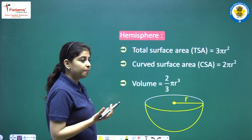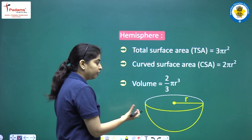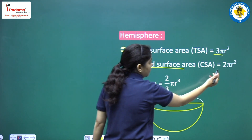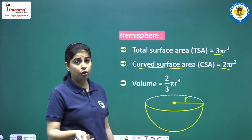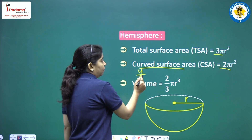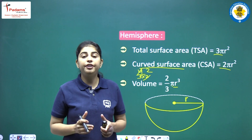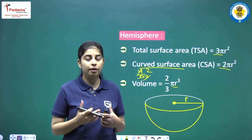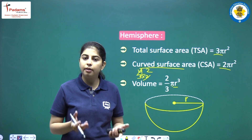Next, hemisphere — hemisphere is half of a sphere, like cutting a ball in half. It has radius r. The total surface area of a hemisphere is 3πr². The curved surface area is 2πr². The volume of a hemisphere is (2/3)πr³.